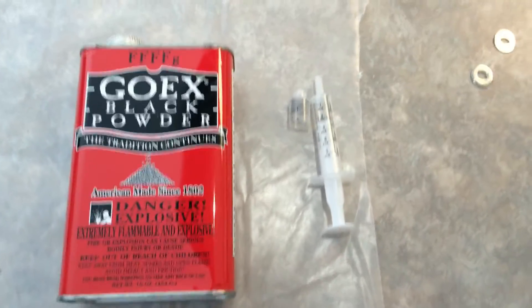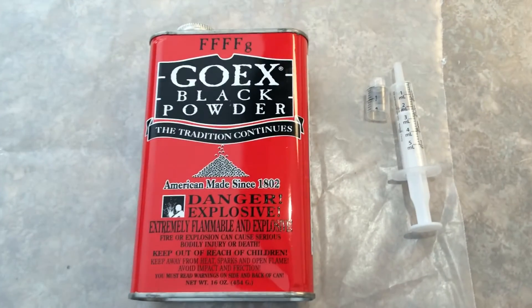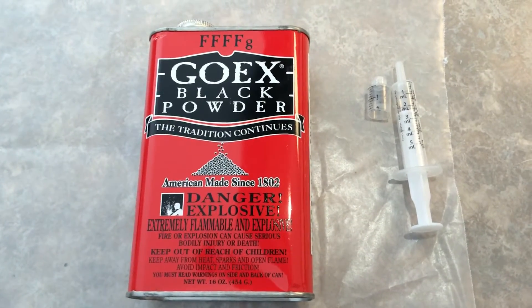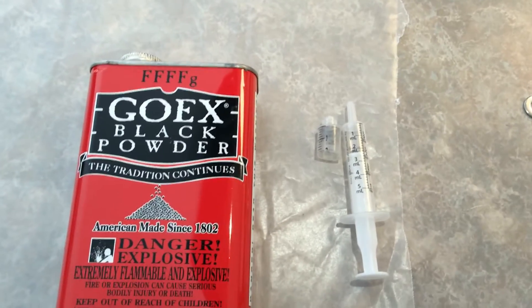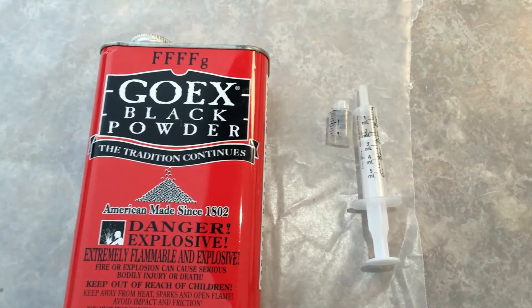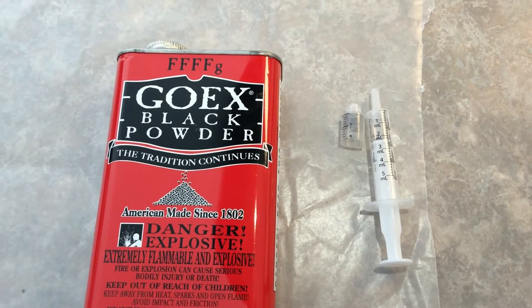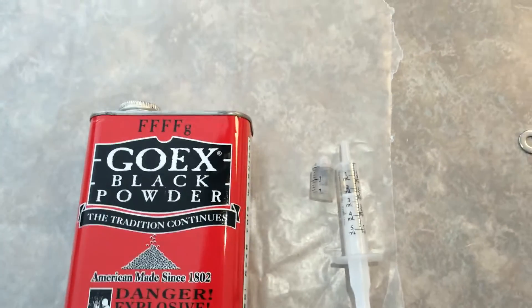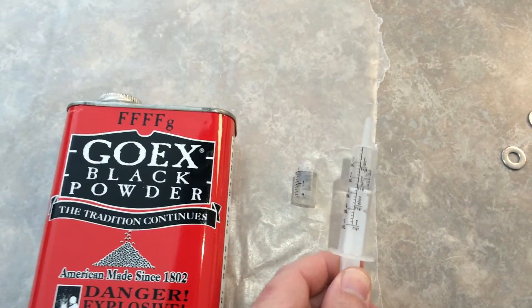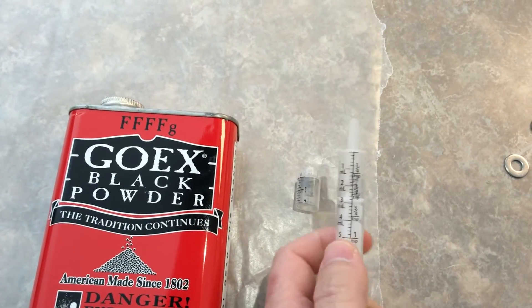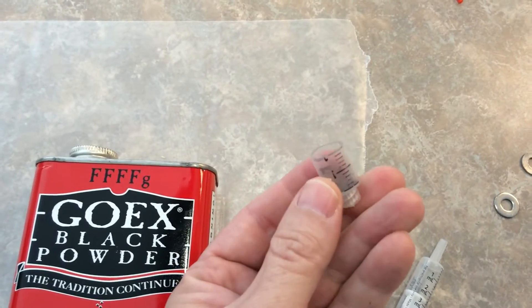When you're calculating your black powder you'll notice they're telling you to calculate it in grams. Well I don't have a gram scale, but if you look it up you'll find that 0.95 grams is equivalent to 1 cc or 1 milliliter.